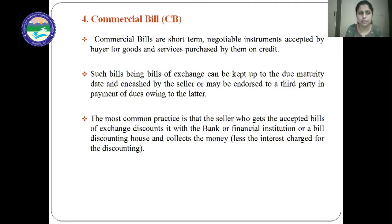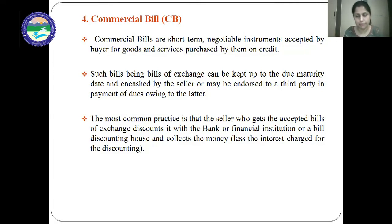Next is the commercial bill. Commercial bills are short-term negotiable instruments accepted by the buyer for goods and services purchased on credit. Such bills, being bills of exchange, can be kept up to the maturity date and encashed by the seller, or endorsed to a third party in payment of dues. So commercial bills being bills of exchange are transferable — sellers can transfer the commercial bill to a third party if they require funds. The most common practice is that the seller who gets accepted bills of exchange discounted with the bank or financial institution or a bill discounting house and collects the money.